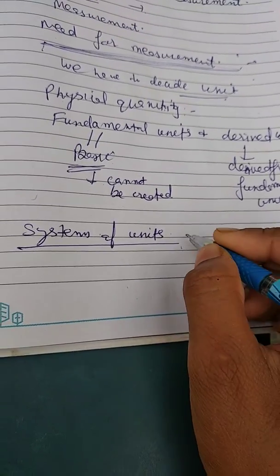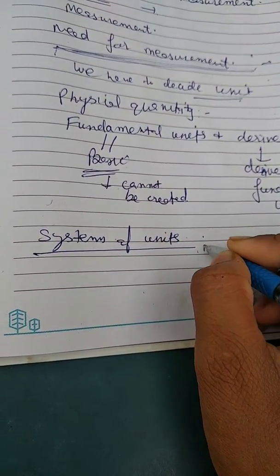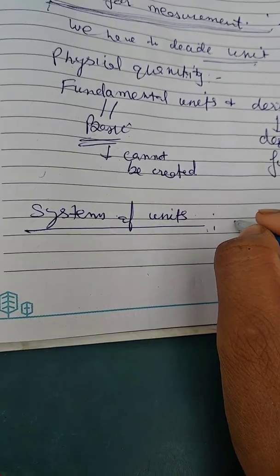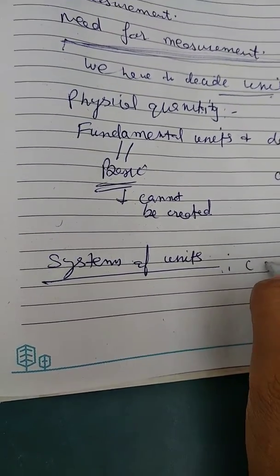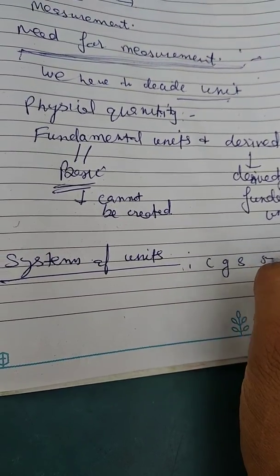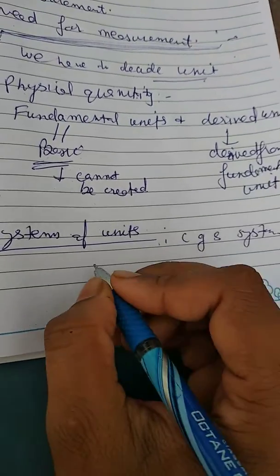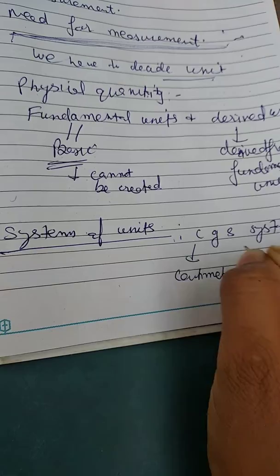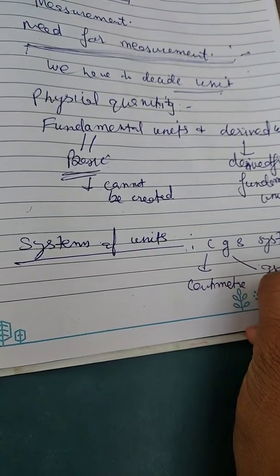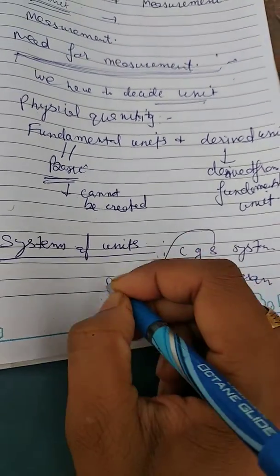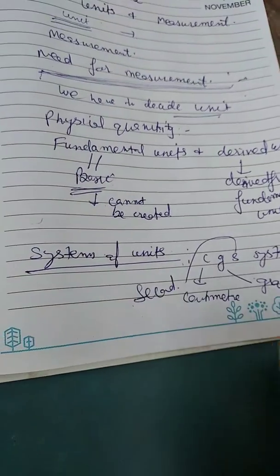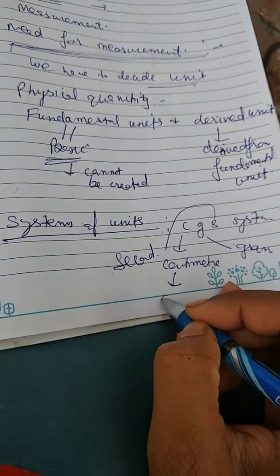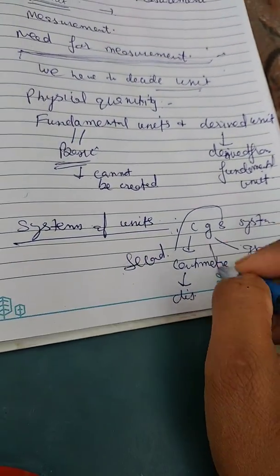System of units - we have basically four systems of units. First is CGS system, in which C is for centimeter, G for gram, and S for second. Centimeter is the unit of distance, gram is the unit of mass, and second is the unit of time.